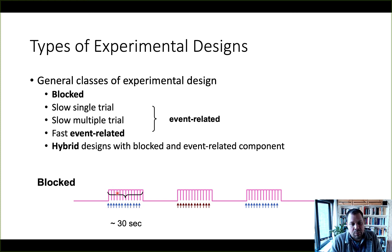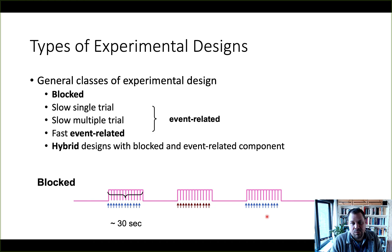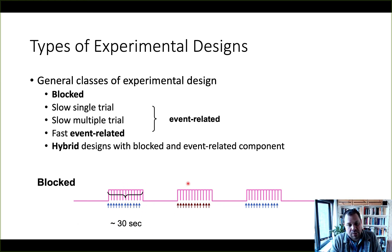We're basically blocking the presentation of one particular type of stimulus. This is then followed possibly by a null event and then another block with a different category — in our example, neutral faces followed by happy faces. You can randomize the order of the blocks. In block designs we chunk together events of a similar type and compare the hemodynamic response for the entire 30-second period of one condition to that of another 30-second period in another condition.